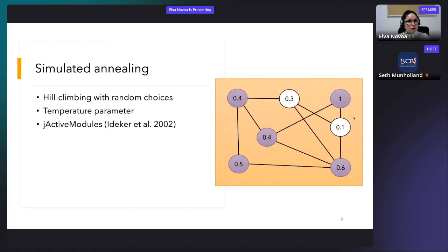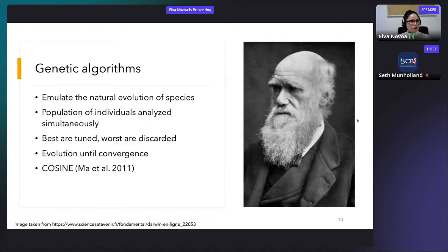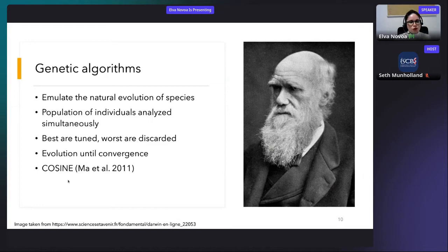The third approach that has been used to look for active modules is based on genetic algorithms, which emulate the natural evolution of species. In a genetic algorithm, there is a population of individuals analyzed simultaneously. Every individual is a potential solution and has a score associated with it. The best individuals are tuned, while the worst are discarded, and the population evolves until it converges. COSINE is such an algorithm.